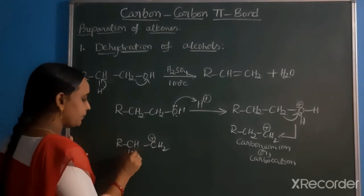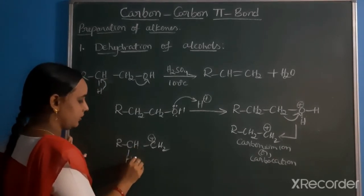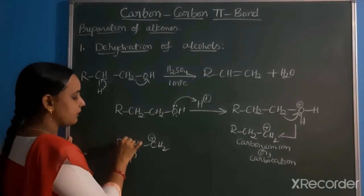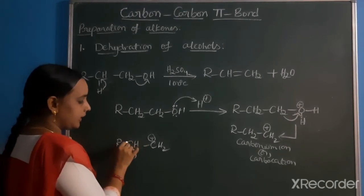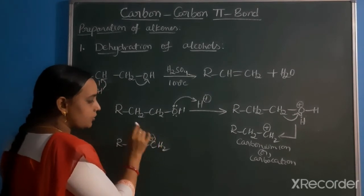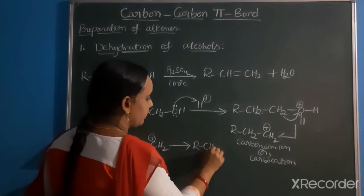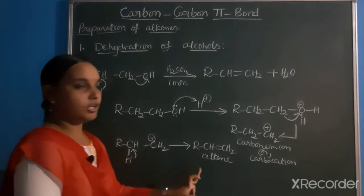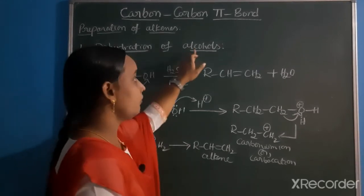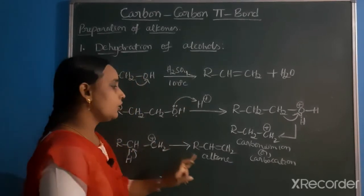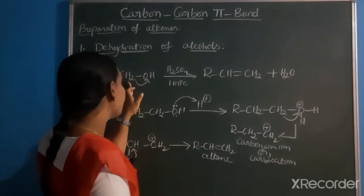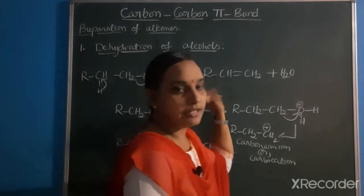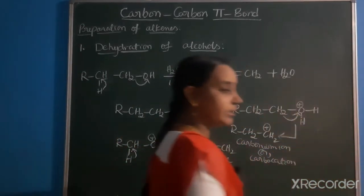When H plus ion is eliminated and a negative charge is created on one carbon while the adjacent carbon has a positive charge, these two electrons form a double bond. This is how the alkene is formed. The preparation method is dehydration of alcohols - a water molecule is eliminated.